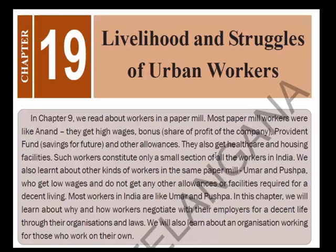This is called an organized job because workers get wages, bonus, provident fund, and other allowances. We also learned about other kinds of workers like Umar and Pushpa in the same paper mill. These workers get low wages and do not get any other allowances or facilities required for decent living. Most workers in India are like Umar and Pushpa — in India, unorganized workers are more than organized workers. Organized workers constitute 8% whereas unorganized workers constitute 91% of the working population. In this chapter we will learn about why and how workers negotiate with their employers for a decent life through their organizations and laws.